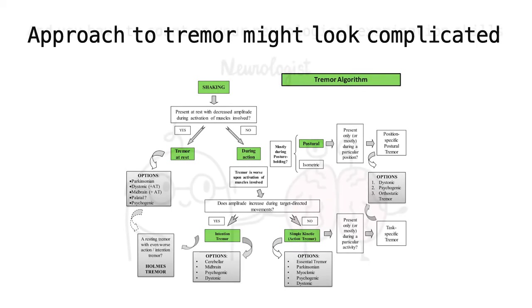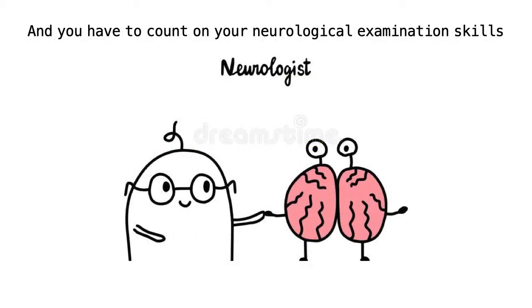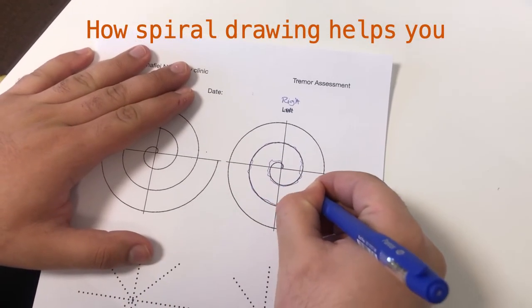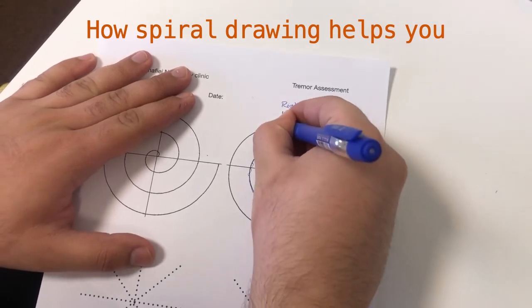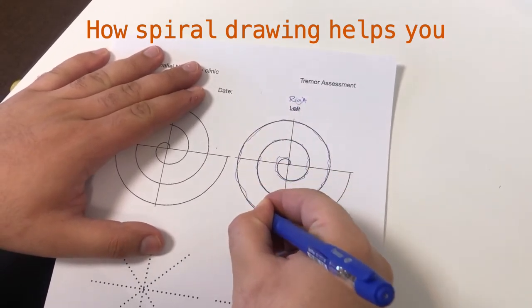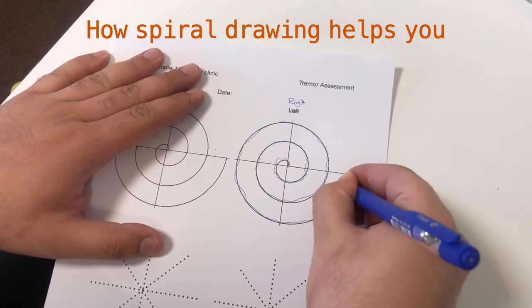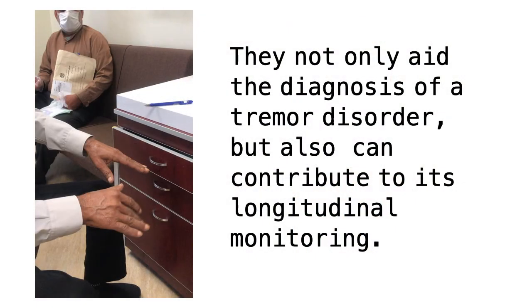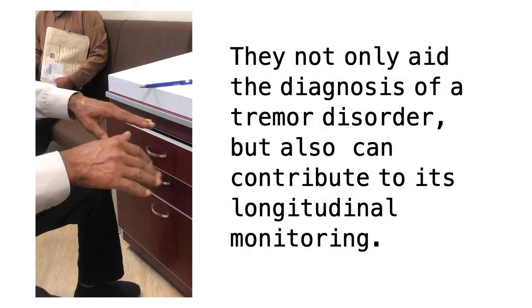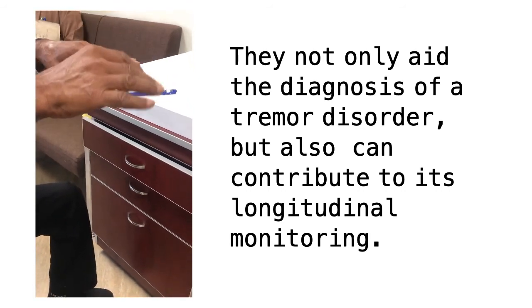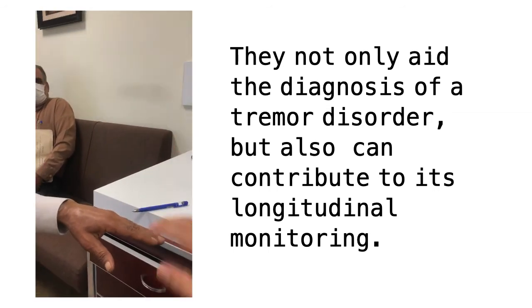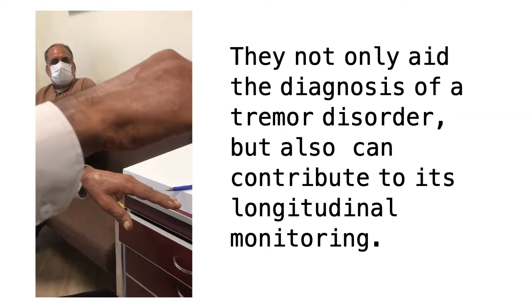As in many other parts of neurology, you have to count on your neurological examination skills. For tremor, I found that spiral drawing has many helpful powers to distinguish between different types of kinetic tremors. In this video, I'm going to show you how you can use it to expand your differential diagnosis. They not only aid you in diagnosis of tremor disorders but also can contribute to longitudinal monitoring and follow-up of your patients.